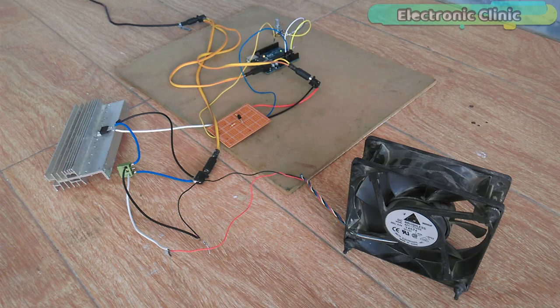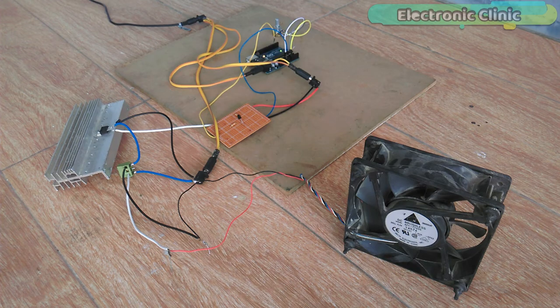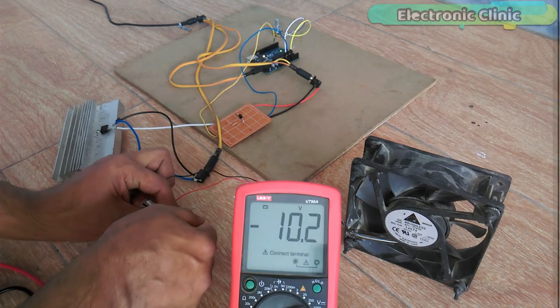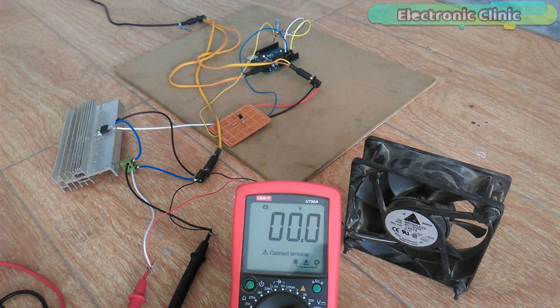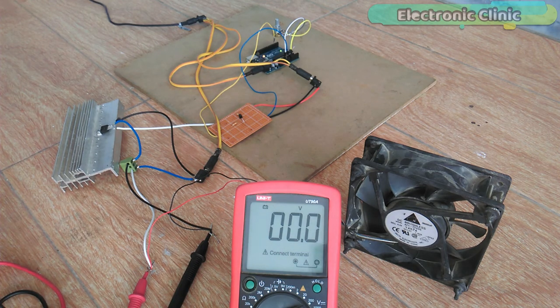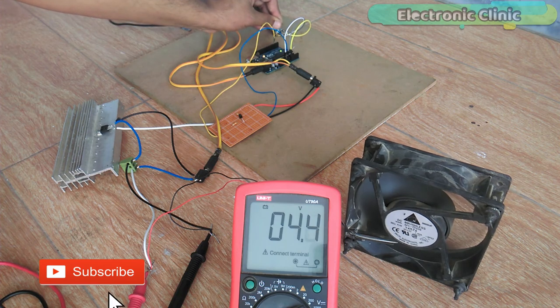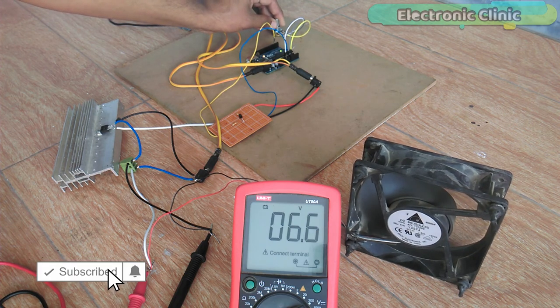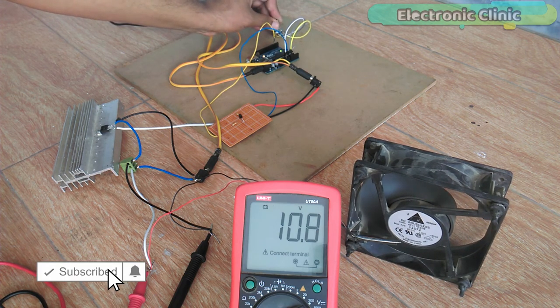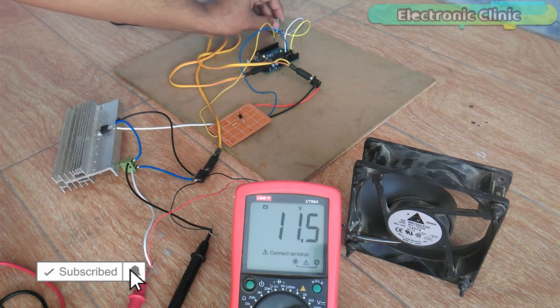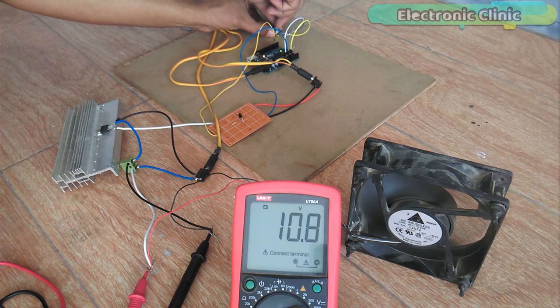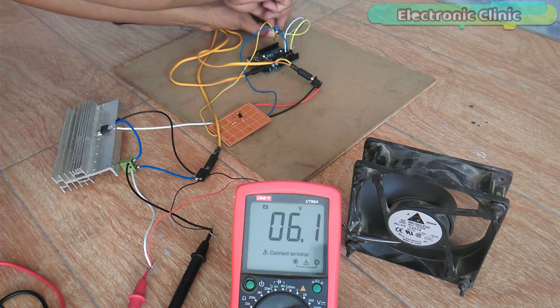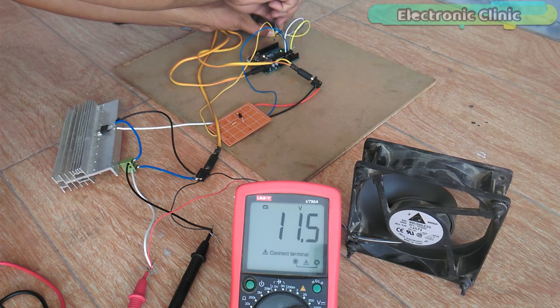As you can see, 12V power supply is connected with the Arduino MOSFET driver circuit and with the MOSFET itself. Let's connect a digital multimeter. Currently, the voltage is 0. Now let's use the variable resistor to control the speed of the CPU fan. This is the maximum speed and 11.5V is the maximum voltage I am getting out of the 12V adapter. Using the variable resistor, we can increase and decrease the speed of the DC motor so fast.